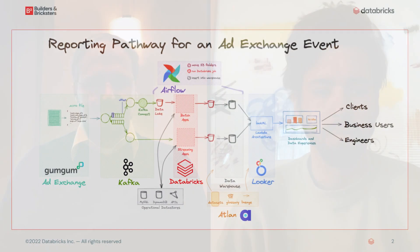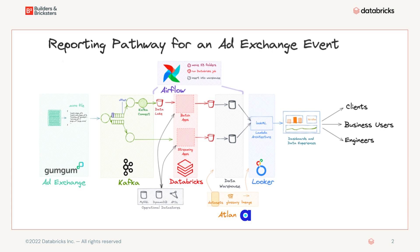So how does GumGum use data — the contextual data — architecturally? Our journey starts in Kafka. We have our ad exchange publish these event types to different Kafka topics. From Kafka, we make a split into real-time data and batch data. For our batch data, we have about 45 different Databricks jobs or workflows with a Spark app. That Spark app is basically reading the Kafka data, which has been put in S3 via Kafka Connect, then taking that data and transforming it from either JSON or Avro into a tabular format — doing some validation, applying some business logic, doing all sorts of data structuring, your raw processing steps — and ultimately putting it into a CSV format that we can push into our data warehouse.